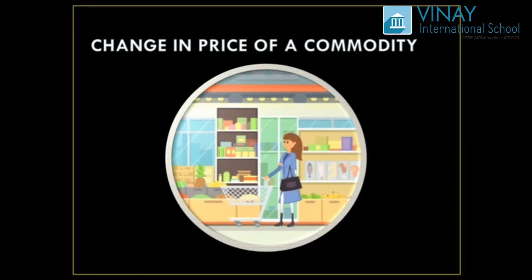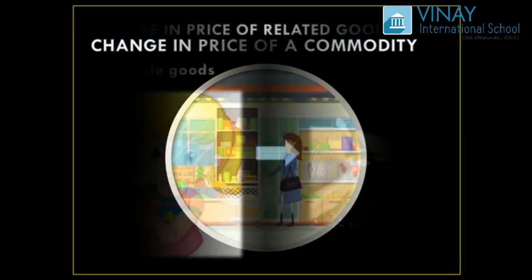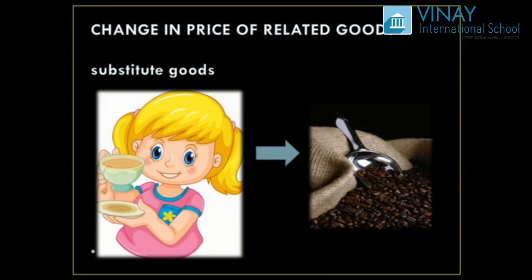If the price of a commodity rises, the demand for that commodity decreases. And if the price of a commodity decreases, the demand rises. For example, if I drink tea at 50 rupees and the price rises to 70 rupees, but coffee is still 50 rupees, I would prefer coffee. This is the concept of related goods — specifically the price of related goods, where we can substitute one good for another.